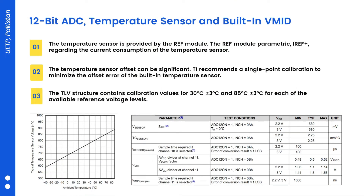We have a 12-bit ADC temperature sensor and a built-in VMID. The temperature sensor is provided by the REF module. TI recommends a single-point calibration to minimize the offset error of the built-in temperature sensor. We have the temperature sensor of the CPU connected on channel 10 of the ADC and we are going to get the temperature of that specific unit.